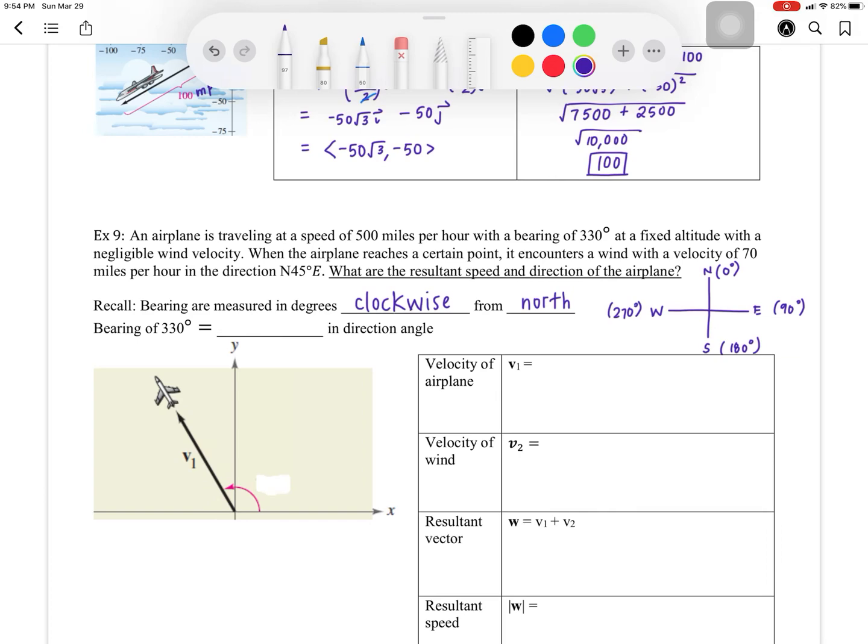So when they're saying 330 degrees, you're going this way, past west, and a little bit here. That's 330 degrees.